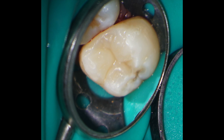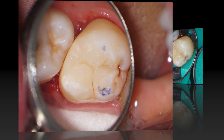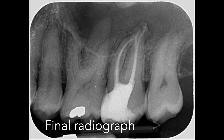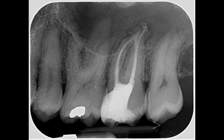Here you can see the finished composite with the matrix still in place. I've now removed the matrix and carried out some polishing. Time to check the contacts before taking a final periapical radiograph — this tooth probably won't need to be crowned. The final radiograph shows excellent coronal-apical seal and you can see that the sealer has been carried all the way down to the apex and has puffed through some lateral anatomy at the apical part of the root canals.